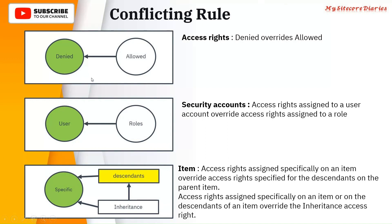So these are how the rules work. The green part will always get precedence over the white part. If you have a conflicting rule where you have denied and allowed, denied will take precedence. User and role — user will get precedence. Specific item access versus inheritance or descendants — specific access will get precedence.